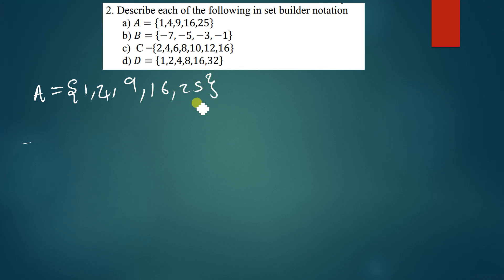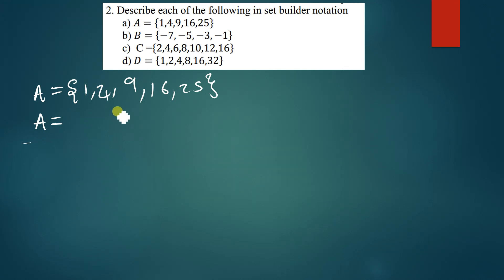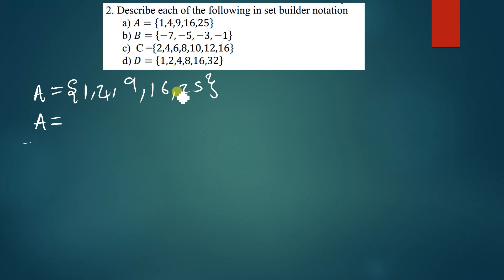When you look at these numbers, these are perfect squares. To write this in set builder notation, let me explain what perfect squares are. It is easier to find the square root of 1, 4, 9, 16, and 25. So these are perfect squares which are less than 26 or 30. In set builder notation, you can either describe a set using mathematical symbols or words inside the brackets.